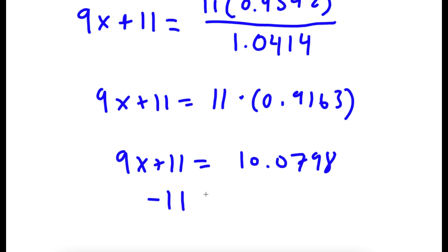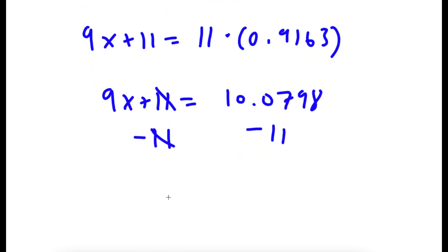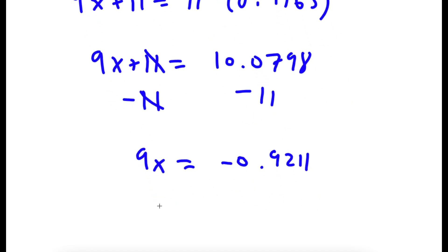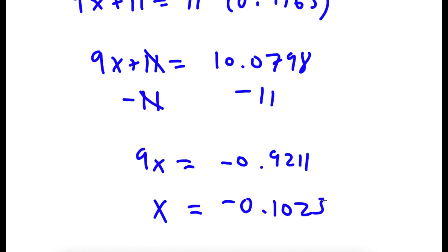So I have this minus 11. So now I have 9x is equal to negative 0.9211, meaning x is equal to negative 0.1023.